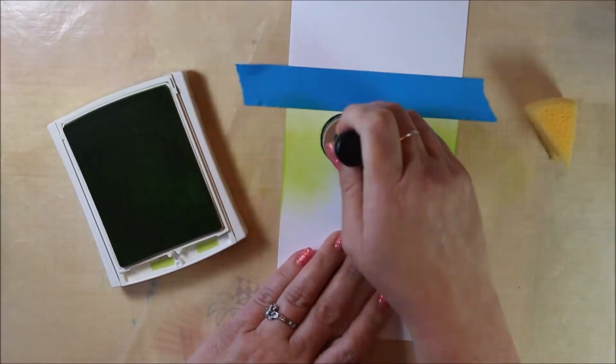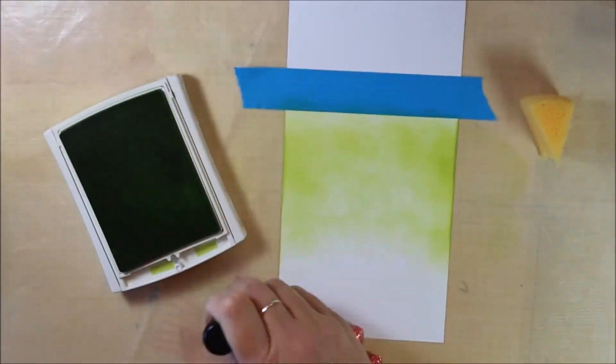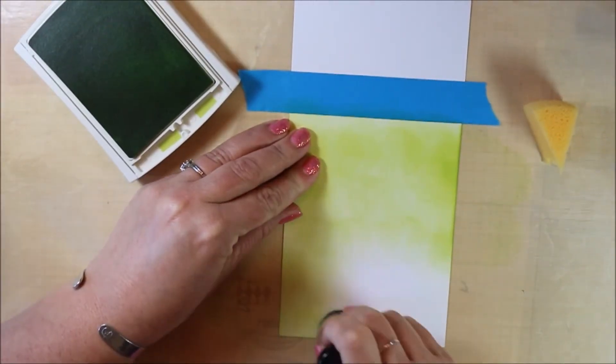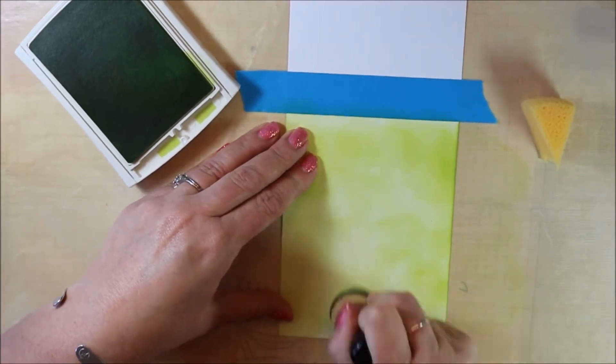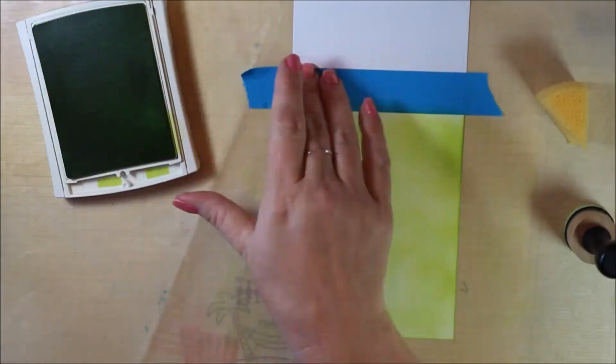I started with a standard card base and I'm using my ink blending tool with some lemon lime twist ink from Stampin' Up. You could use a stamping sponge, but I just find the ink blending tool to be a little bit smoother and easier to use.